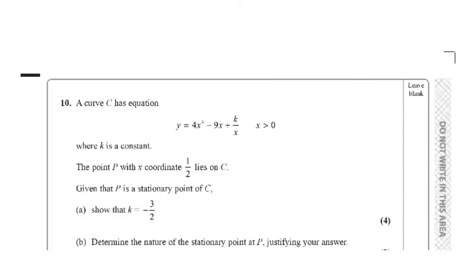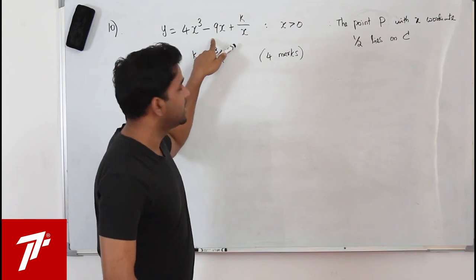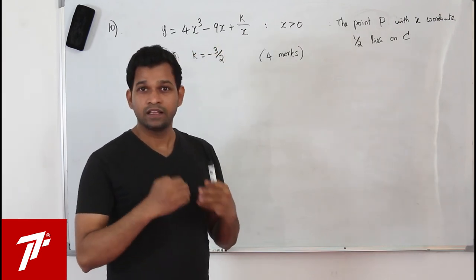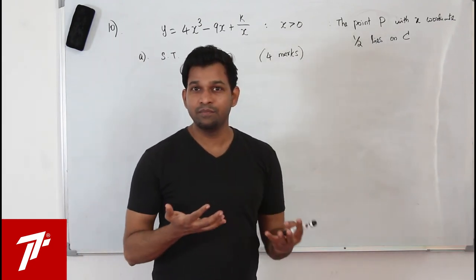Question number 10: curve C has equation y = 4x³ minus 9x + k/x, where x > 0. The point P with x-coordinate 1/2 lies on C and is a stationary point. Part A: show that k = minus 3/2. This has 4 marks.